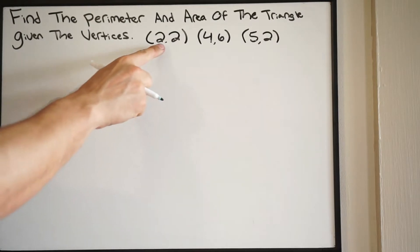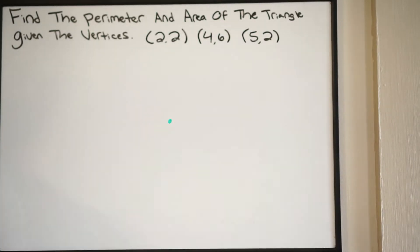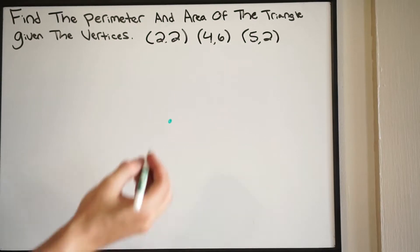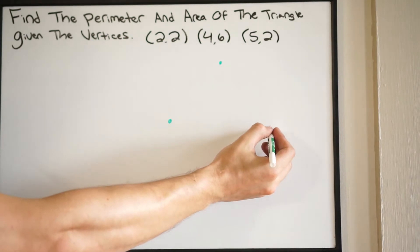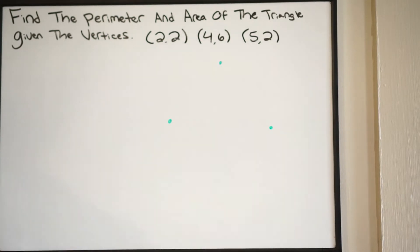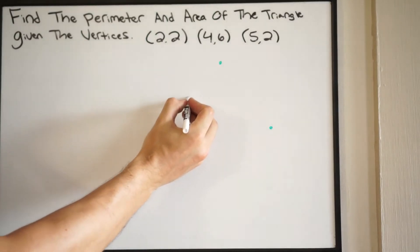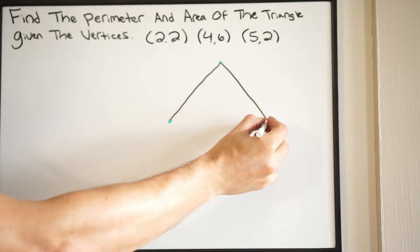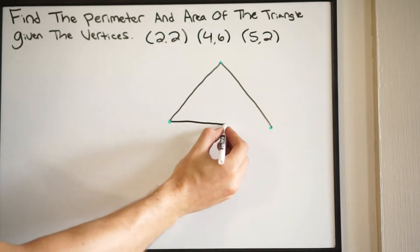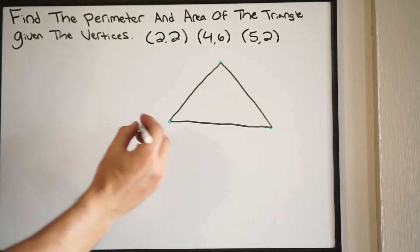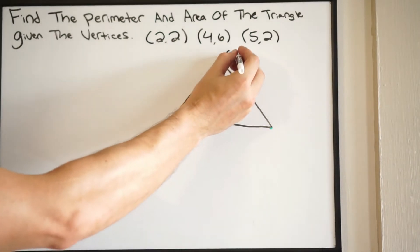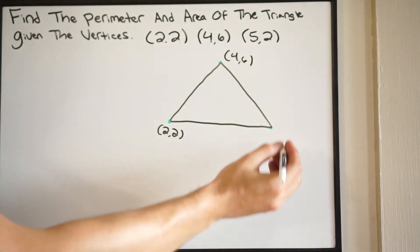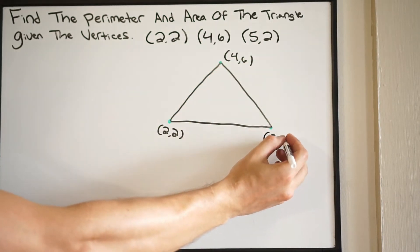So we have the following: we have (2,2), so we'll just put that right here. Then we'll say that this is going to be (4,6), and then this will be (5,2). We can see that we have a triangle with the general shape that will look like this. So let's go ahead and draw that in and put our coordinates right next to each one of our vertices. So this is (2,2), this is (4,6), and this is (5,2).